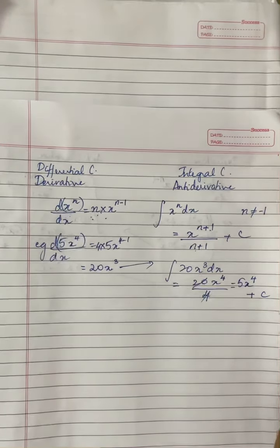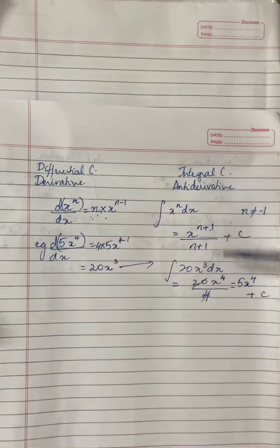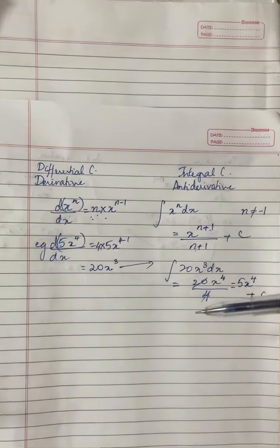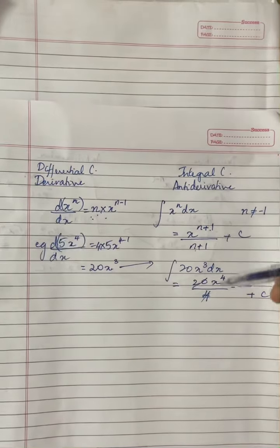With a c because as I said in the previous video, we do not know if there was ever a constant with our question when we are integrating. So if there was a constant with our question, after differentiation the constant disappeared. So when we are integrating we just write it down just to be on the safer side that there may have been a constant.